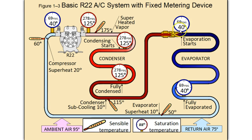Dropping the pressure automatically drops the temperature of the refrigerant, and it is at its saturation point immediately. So it is changing state immediately at the beginning of the evaporator coil, from liquid to vapor.